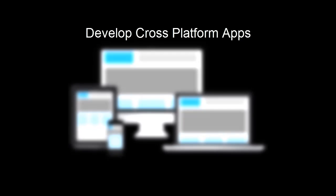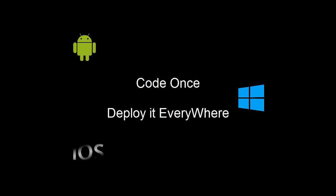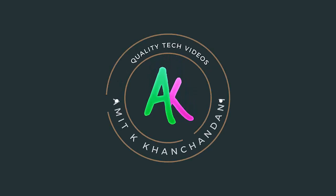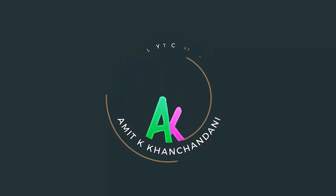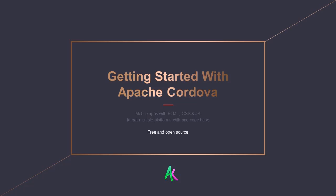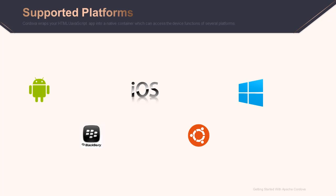So you need to develop cross-platform apps — code once and deploy it everywhere. Apache Cordova is a mobile application development framework. It is used to develop cross-platform apps with a single code base. This means write code once and deploy it anywhere — be it Android, iOS, Windows, Blackberry, Ubuntu, and many more.